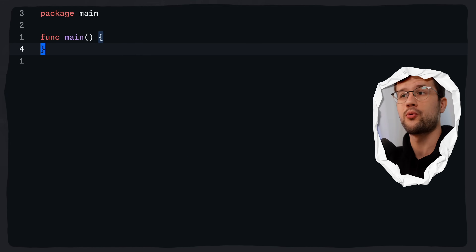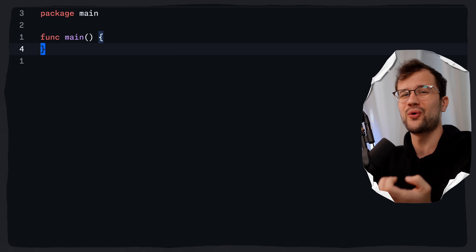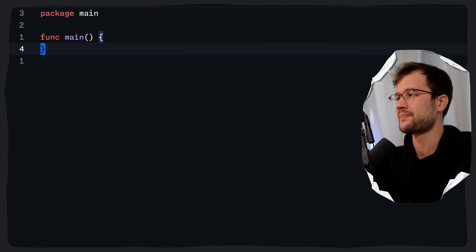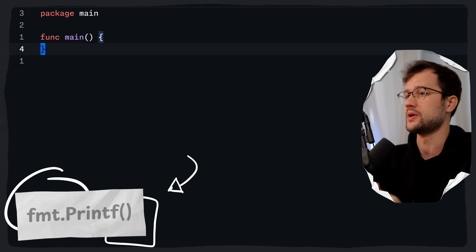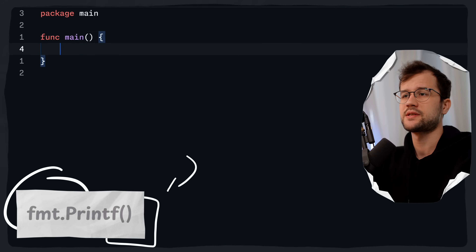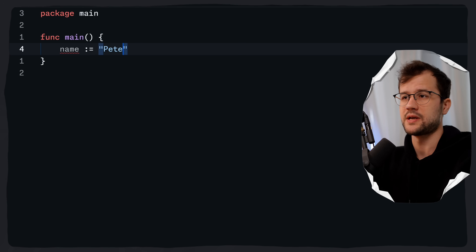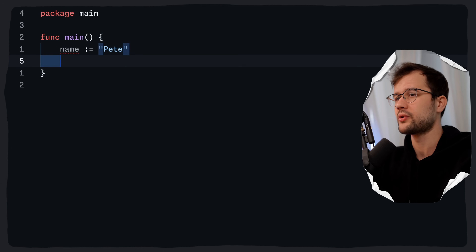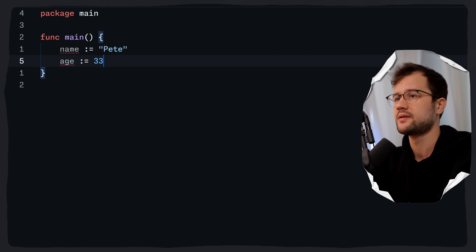The first and most obvious way to print something to the console is fmt.Println, but also fmt.Printf. Let's say that we have a variable name with the value Pete, and then we also have an age which might be 33.